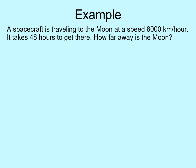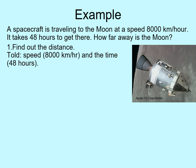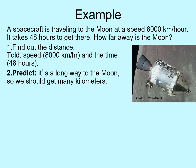Here's a simple word problem we can try: there's a spacecraft going to the moon at 8,000 kilometers per hour. If it takes 48 hours to get there, how far away is the moon? Step one is read the question. You should notice two key things: it wants you to find the distance, and it's told you the speed and the time. Step two is your prediction. The moon is a long distance away, so we should get a lot of kilometers. If we get an answer that's only one or two kilometers, we'll know something is wrong.